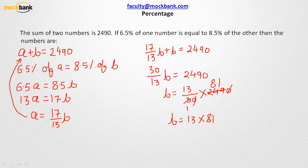The key takeaways from this session: percent is written as 1/100; 'of' is written as multiplication; A percent of B equals B percent of A; and to solve for two variables, you need two equations. Thank you for watching. For any doubts or queries, write to us at faculty@mockbank.com. Bye and take care.